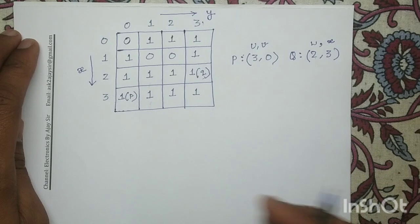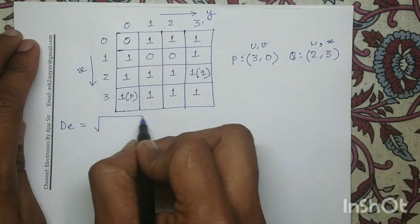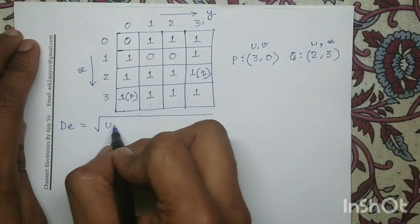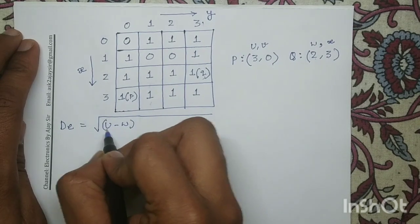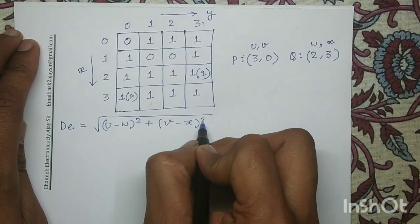The standard equation of Euclidean distance DE is equal to square root of (U minus W) whole square plus (V minus X) whole square.